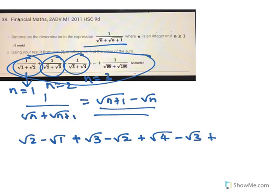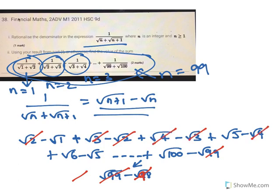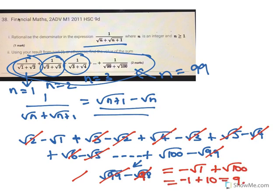If you keep going with this pattern, you can see the next ones would be root 5 minus root 4, root 6 minus root 5, and so on. When you get up to the very last term, n equals 99, so it's root 100 minus root 99. As you can see, things cancel — root 99 cancels, root 98 cancels, the root 2 cancels with root 2, root 3 with root 3, root 4 with root 4, and so on. The things left are minus root 1 plus root 100, so that's minus 1 plus 10, which gives you 9 in the end.